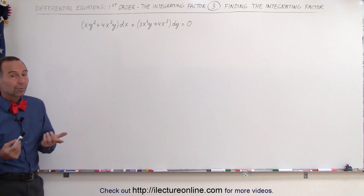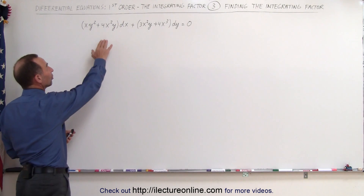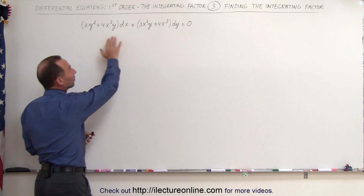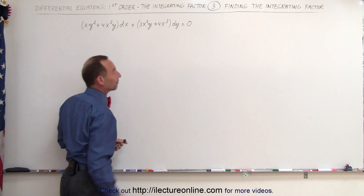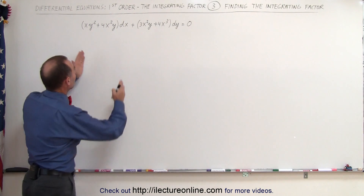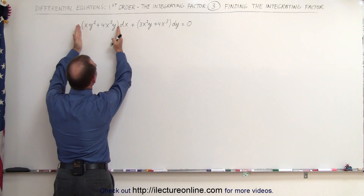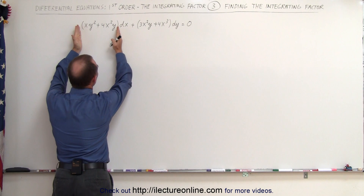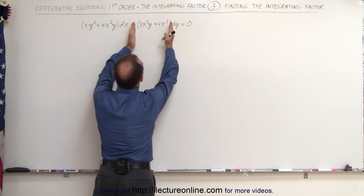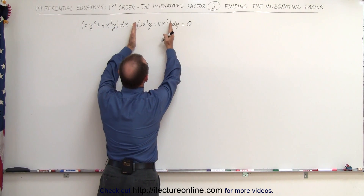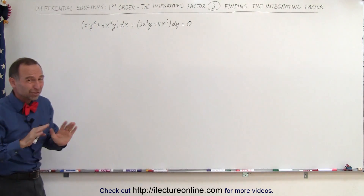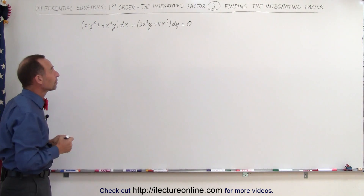Remember that the partial of M with respect to y had to equal the partial of N with respect to x. So when we take this quantity and take the partial with respect to y, that should equal this quantity when we take the partial with respect to x. We already showed that was not the case.